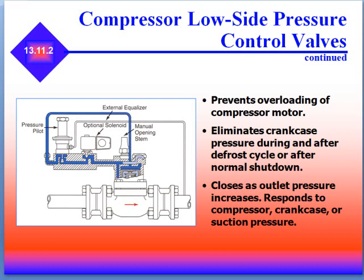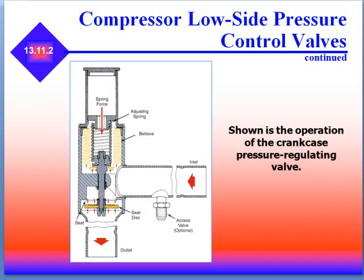The valve closes as the outlet pressure increases and responds to a combination of compressor crankcase or suction pressures. Also shown in this picture is the operation of the crankcase pressure regulator valve — the inlet pressure comes in with the red arrow pointed to the left, and the outlet goes on to the compressor.